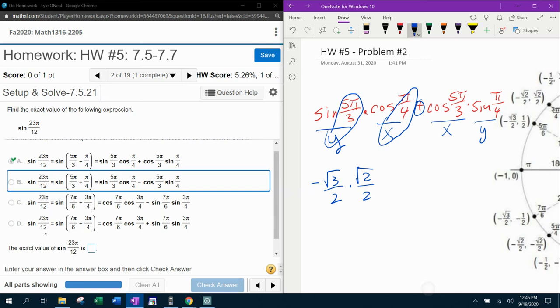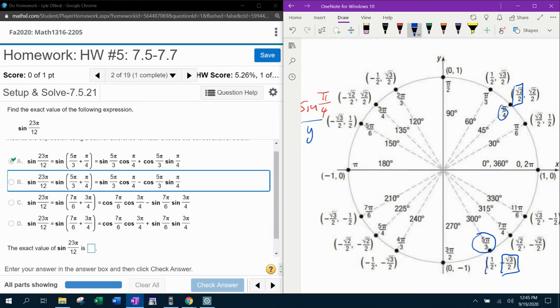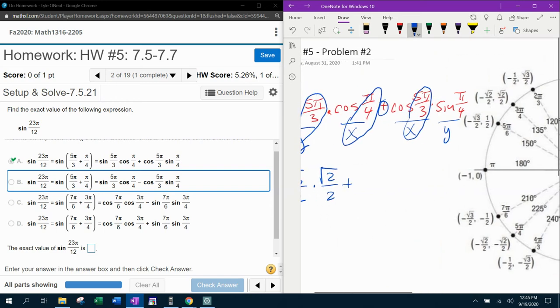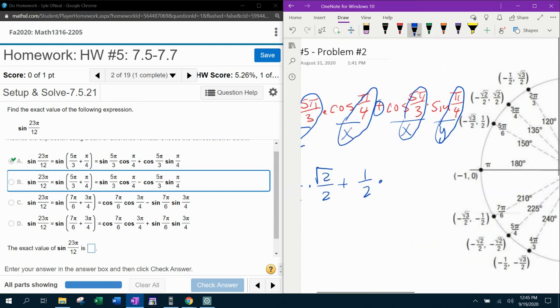And then I've got my plus sign. And then I need the x coordinate at 5π over 3, which is positive half. And I need the y coordinate at π over 4, which is square root of 2 over 2.